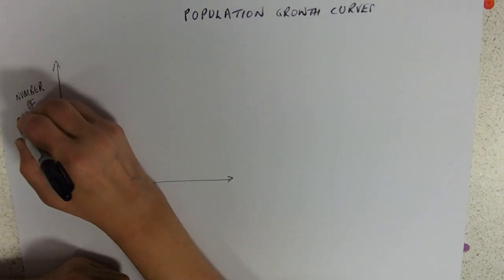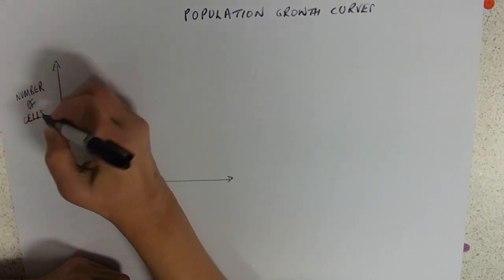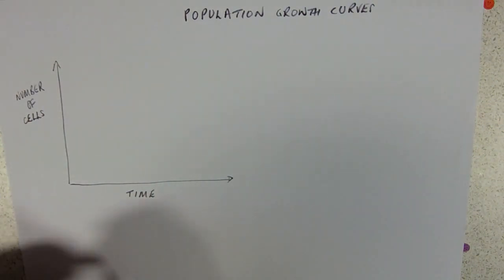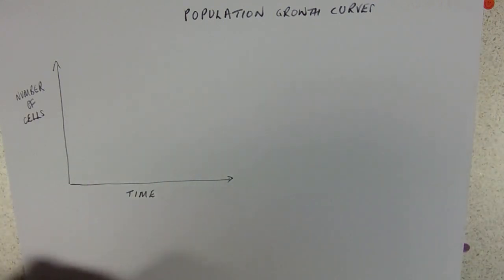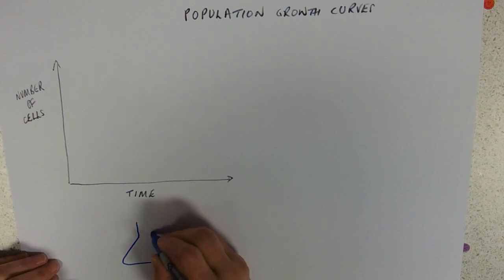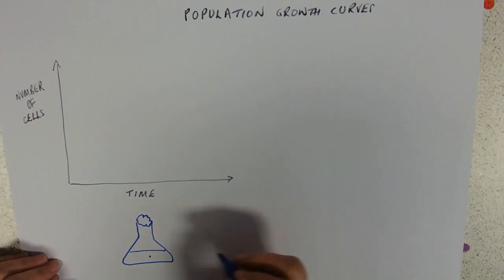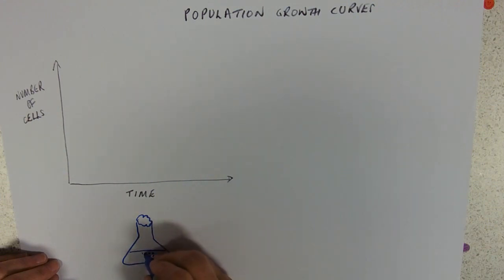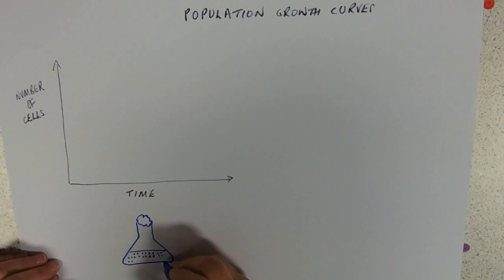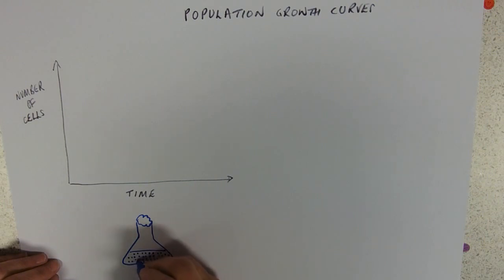We're going to start off with number of cells. Imagine inoculating a flask with bacteria — you've got your agar in there, you open it up and stick one bacterium in. Twenty minutes later you've got two, forty minutes later you've got four, then eight, then sixteen, then thirty-two, because they double all the time. Eventually you leave it long enough and you'll have about eight million.